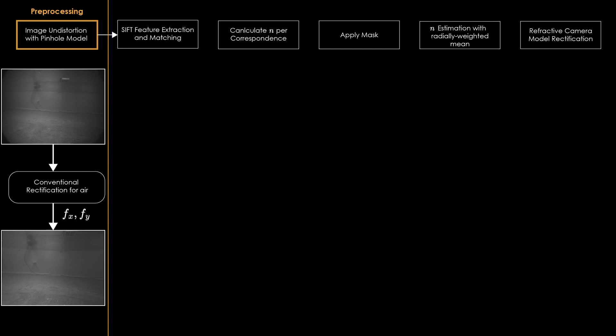We now present a step-by-step outline of our method. First, a conventional image rectification method is used to remove lens distortion and obtain pinhole camera parameters for calibration in air.